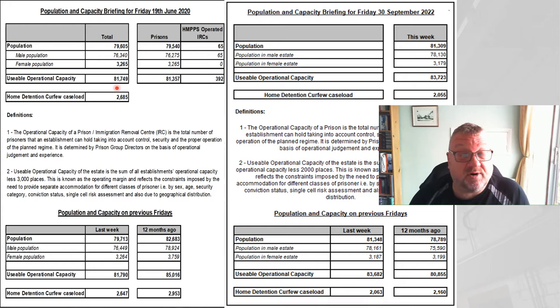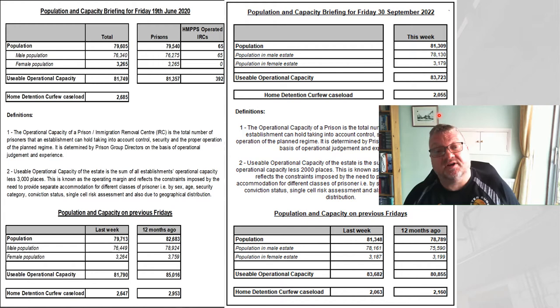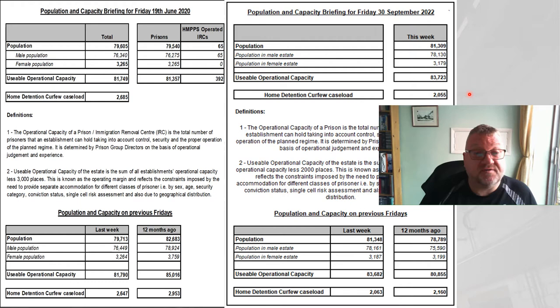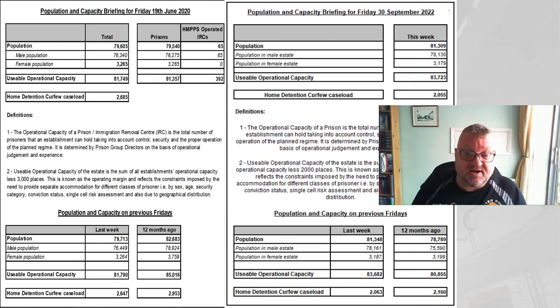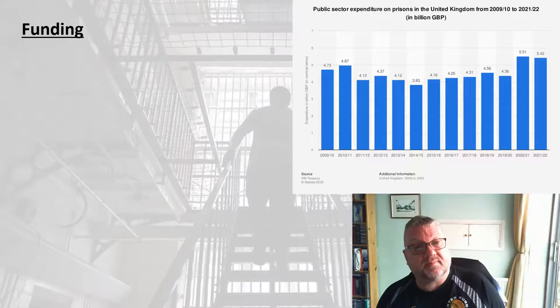The overall population including those on a home detention curfew caseload was 81,749 in 2020 and 83,723 in 2022, though the home detention curfew caseload is slightly down this year. This gives you a feel for how many people — male and female — are in prison in this country.